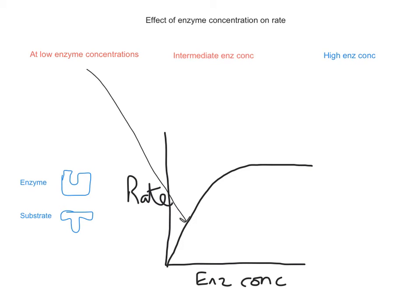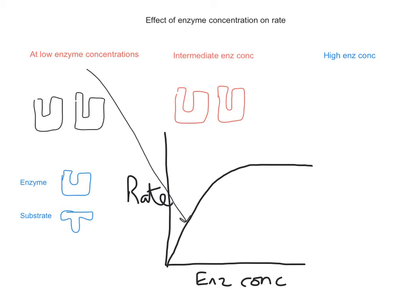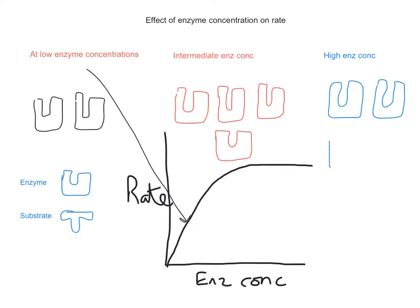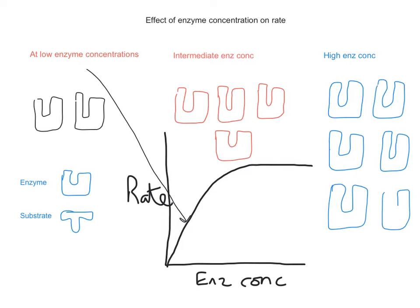I'm going to talk about how the change in enzyme concentration can affect the rate of reaction. I've got a crude representation of an enzyme — a U-shaped thing. I'm going to look at low enzyme concentrations, represented by two enzyme molecules; intermediate enzyme concentrations, represented by four enzyme molecules, referring to where the graph plateaus; and at high enzyme concentrations, six enzyme units — the part where rate of reaction cannot get any faster, the flat part of the graph.